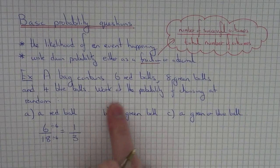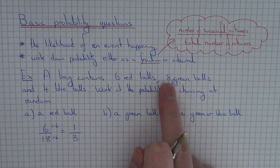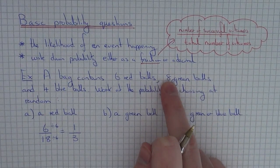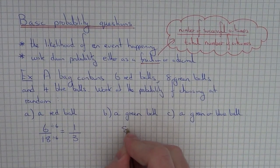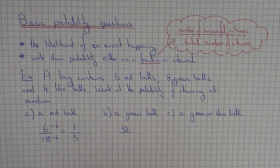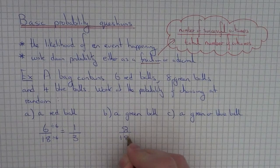The next thing we've got to do is to work out the probability of choosing a green ball at random from the bag. So this time the number of successful outcomes that we need is 8, so that will go on the numerator. And again the total number of outcomes we already know which is 18.